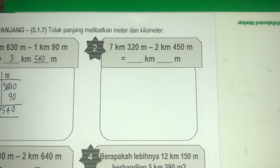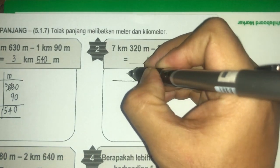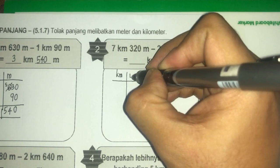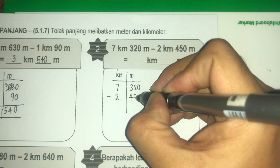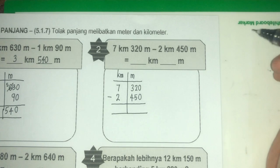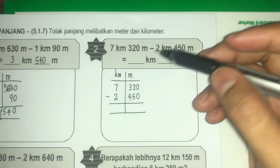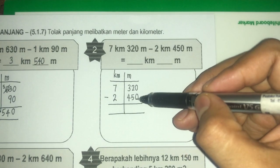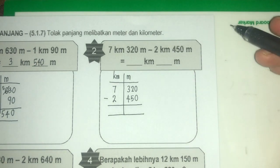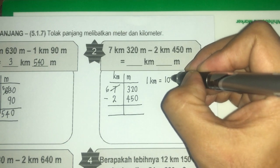Kita pergi kepada soalan yang kedua: 7 kilometer 320 meter tolak 2 kilometer 450 meter. Jawapan nak diberikan dalam kilometer dan meter. Buatkan bentuk lazim terlebih dahulu dan masukkan nombor dengan betul. Untuk menolak dalam unit kilometer dan meter, kita tengok — 320 tolak 450 meter, 320 kecil, 450 besar. Tak boleh. Kita kena pinjam. Bila kita pinjam daripada rumah kilometer, kita pernah belajar dulu — 1 kilometer sama dengan 1,000 meter.